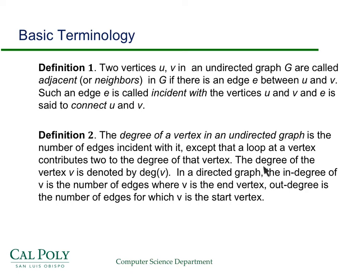We're not going to worry too much about the degree of a vertex in undirected graphs. We'll be more concerned with directed graphs, where you have the distinction between in-degrees and out-degrees. So in a directed graph, the in-degree of a vertex is the number of edges where V is the end vertex. In other words, it's the number of vertices coming in to V, hence the name in-degree. And the out-degree is the number of edges for which V is the start vertex. It's the number of edges that are going out from V.